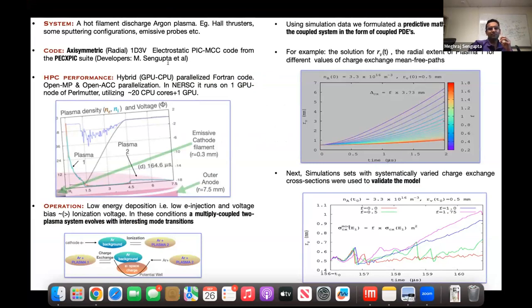So the system we are interested in modeling is a hot filament discharge of argon plasma. The system looks somewhat like this. It's a coaxial plasma discharge system with an inner cathode which emits electrons and it's a very thin radius of around 0.3 millimeter and an outer coaxial anode shell which is of 7.5 millimeter radius. And the region in between is filled with argon gas maintained at a given pressure. And we are specifically interested in modeling plasma mode transitions in this kind of a system.